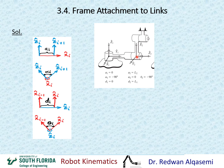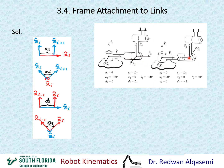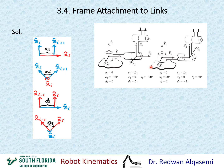We have the option to assign z2 in the opposite direction — instead of pointing right, it points left. This will affect the DH parameters. Looking at alpha1 with z2 now pointing left, we examine the angle between z1 and z2 about x1. Putting my thumb along x1 and four fingers along z1, to go from z1 to z2 I now have to rotate positive 90 degrees. So alpha1 becomes positive, as opposed to negative in the first case.